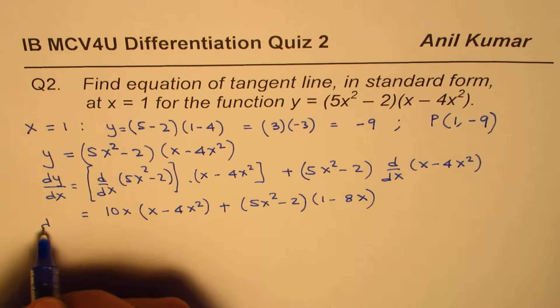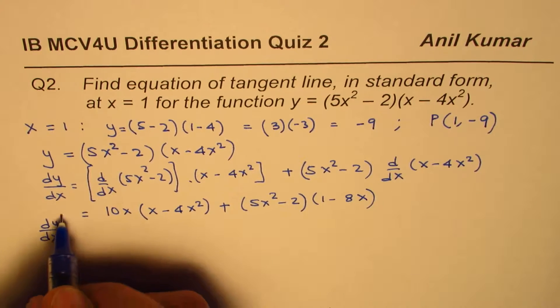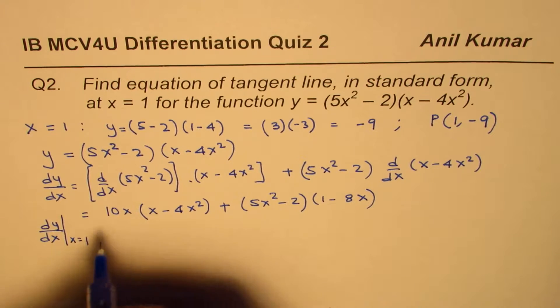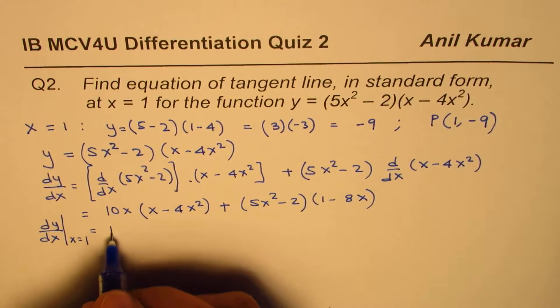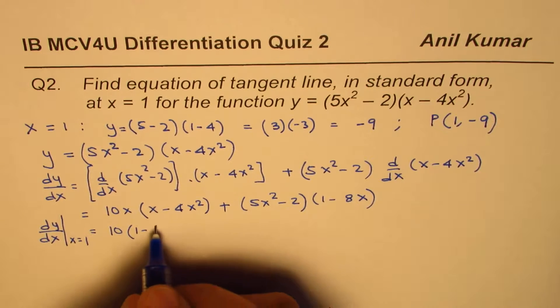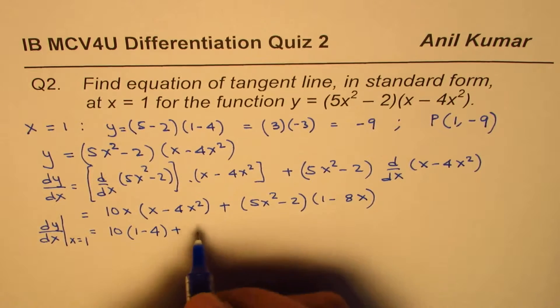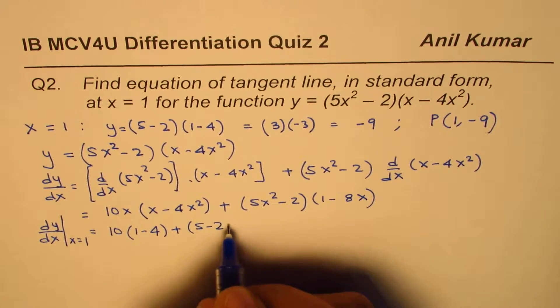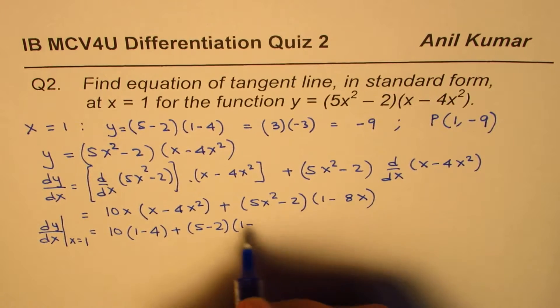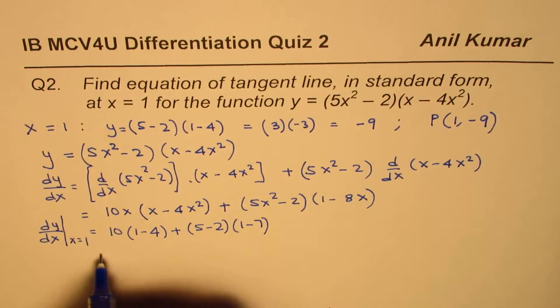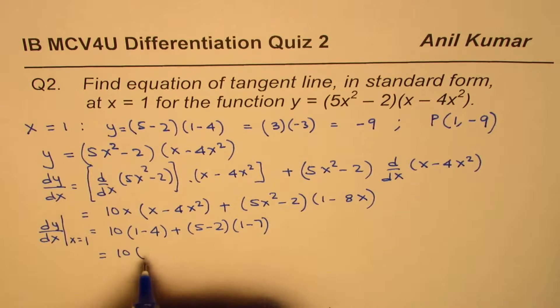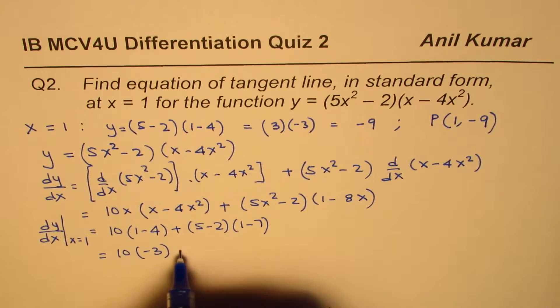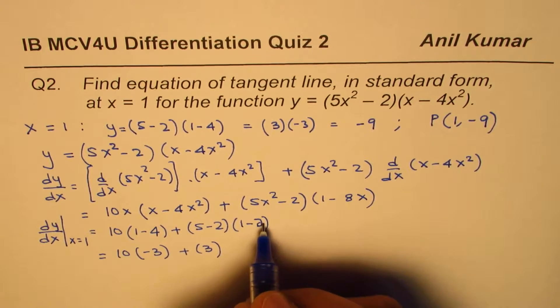So at this stage, we can find the value of the derivative, that means dy/dx at x equals 1. So I'll substitute x equals 1 here. So we get 10 times 1 minus 4 plus 5 minus 2 times 1 minus 7. And that gives us 10 times minus 3 plus 3 times, I'm sorry, 8. Minus 8.